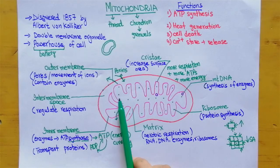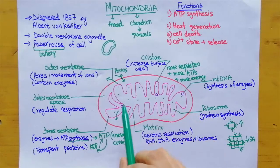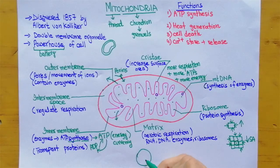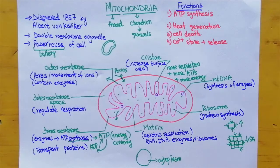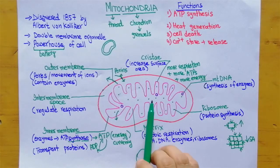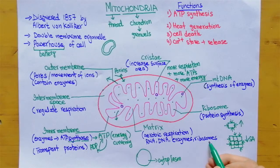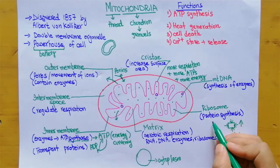The other structure inside the mitochondria is the matrix — the inside space of the mitochondria — where aerobic respiration takes place. Just as the cell has cytoplasm in which many reactions occur, the mitochondria has the matrix where aerobic respiration occurs. The matrix consists of RNA (ribonucleic acid), DNA (deoxyribonucleic acid), enzymes, and ribosomes. The ribosomes present inside the matrix are responsible for protein synthesis.